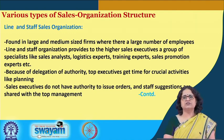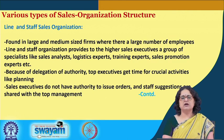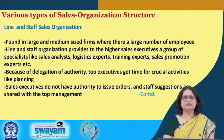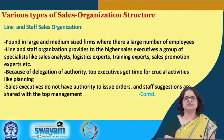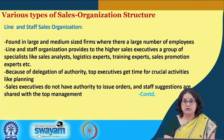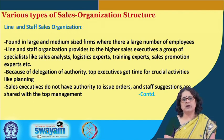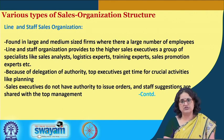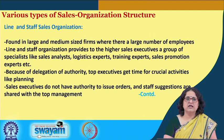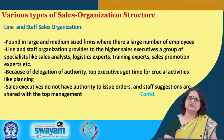The next type is the line and staff sales organization. Line and staff sales organizations are found in medium-sized and large-sized firms with a large number of employees. It gives the higher sales executive a group of specialists — people trained in logistics, accounting, report generation, sales promotion, or sales analysis. Because of delegation of authority, top executives get more time for crucial planning, and the branch head can contribute much more to planning activities. Sales executives do not have authority to issue orders, and staff suggestions are shared with top management.